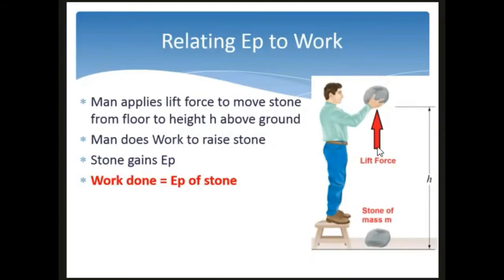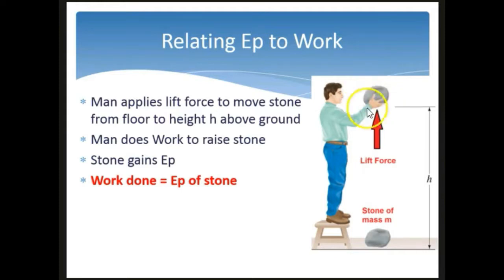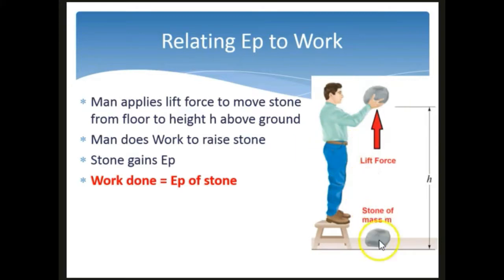Let's relate gravitational potential energy to work done. For a person to raise a stone to height H, he exerts a lift force and moves the rock a distance H in the direction of the force. The rock gains GPE. If the work done by the person is 50 joules to lift the rock, then the gain in GPE of the rock is also 50 joules. The amount of work done equals the gain in gravitational potential energy.